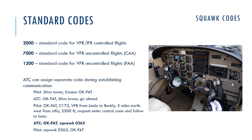ATS service can assign a separate code during the establishing of communication. When you are going to enter a control zone, you have to get clearance and first establish communication. For example, a pilot calls to the tower: 'Silver Tower, Cessna Oscar Kilo Foxit Alpha Tango.' Air traffic service replies: 'Oscar Kilo Foxit Alpha Tango, Silver Tower, go ahead.'